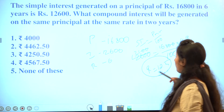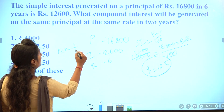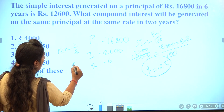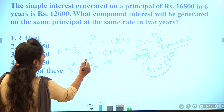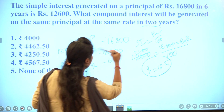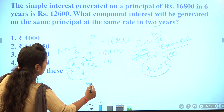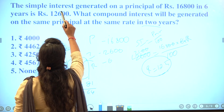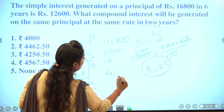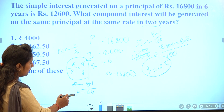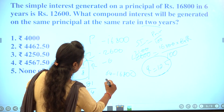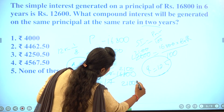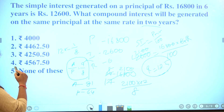For compound interest over 2 years at the same rate, we square the ratio: amount becomes 81 and principal becomes 64. The compound interest is the amount minus principal, giving 81 minus 64 equals 17 parts. Since 64 parts equal 16,800, each part is 2,100 divided by 8. The compound interest is 2,100 into 17 divided by 8. The answer is the second option.